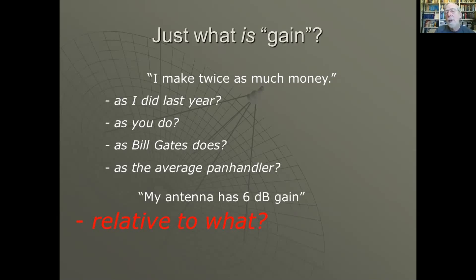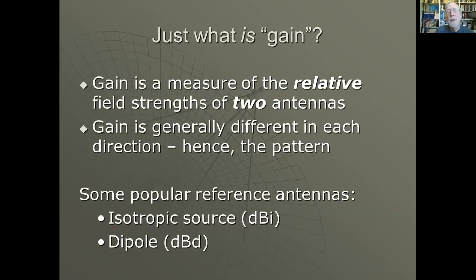We need to know relative to what in order for it to have any meaning. It turns out that there are several different standards that are used. If somebody doesn't tell you what the standard is, you don't know what the actual gain is relative to anything. It's the measure of the relative field strength of two antennas and it's generally different in each direction, hence the pattern. A couple of popular references are an isotropic source and a dipole. When it's referenced to an isotropic source, the gain is said to be in dBi or dB relative to isotropic. Or if it's relative to a dipole in free space, it's dBd. Now both of these have use. You'll find EZNEC, my antenna software, always gives you gain in dBi and I will show you why.